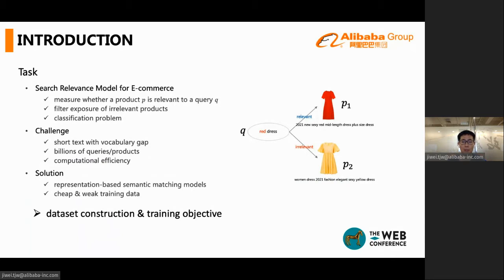In this work, we only consider the title of product. The challenge of this task includes query and products, a short text, and they suffer from severe vocabulary gaps between the user informal query and the seller professional product title. Also, Taobao has billions of queries and products every day. It requires the model to have large capacity. Training data is important but is one biggest challenge for this task.